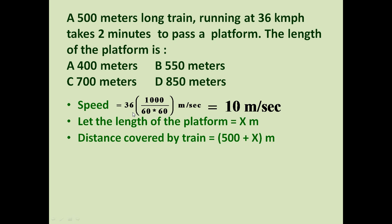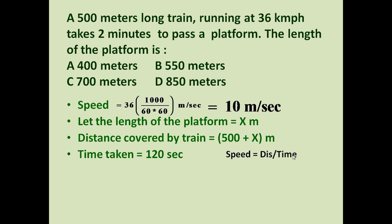The distance covered by the train is 500 + x, the speed is 10 meters per second, and the time taken is two minutes, which equals 120 seconds. We know the formula: speed = distance / time. Here speed is 10, distance is 500 + x, and time is 120 seconds. Let us substitute all three values into this formula.